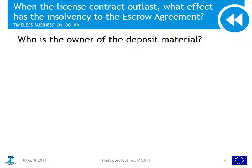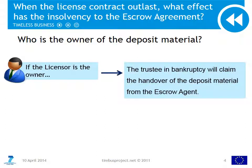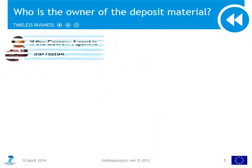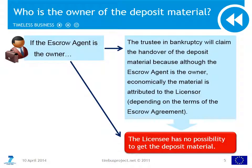When the license contract remains effective, we must ask what effect the insolvency has on the escrow agreement. The simple answer is that it depends on who owns the deposit material. If the licensor is the owner, the trustee in bankruptcy will claim the handover of the deposit material from the escrow agent, and the licensee has no possibility to get the deposit material. If the escrow agent is the owner, the trustee in bankruptcy will still claim the handover of the deposit material, because under insolvency law the material is attributed to the licensor — this depends on the terms of the contract. When the escrow agreement establishes the obligation of the escrow agent to reassign the property of the deposit material when the contract terminates and no trigger event had occurred, the agreement is seen as a trusteeship and the material is economically attributed to the licensor. So the licensee has no possibility to get the deposit material.